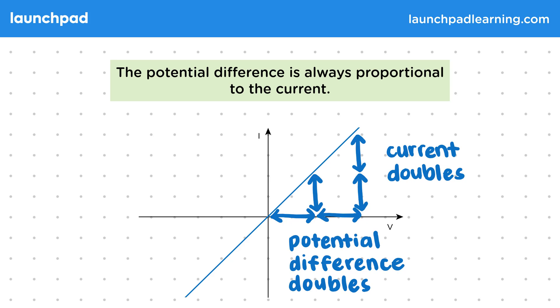Mathematically, we'd write this using this proportionality symbol between the potential difference and current. This means we can write their relation as V equals KI, where K is a constant value. If we rearrange this to V over I equals K, then we can deduce that the constant value K is the resistance of the component, since remember that resistance is found by dividing the potential difference by the current.